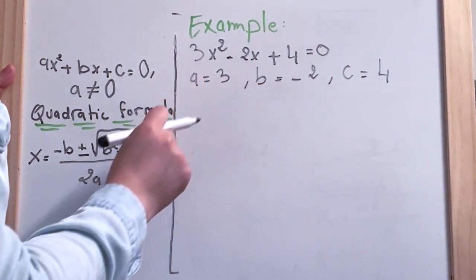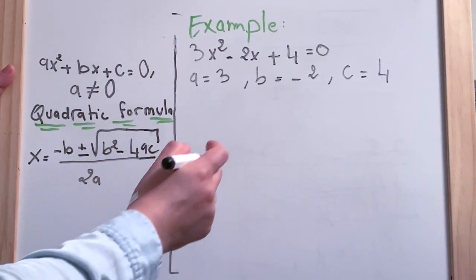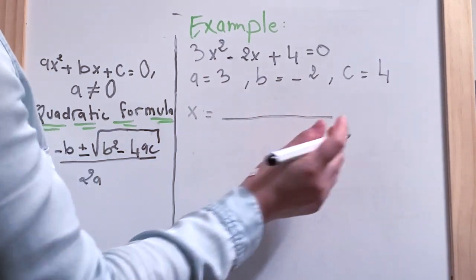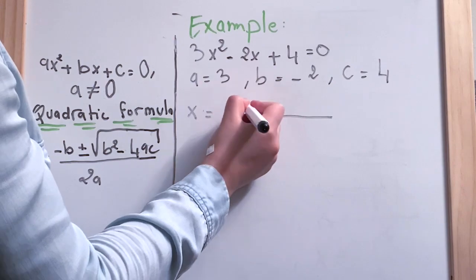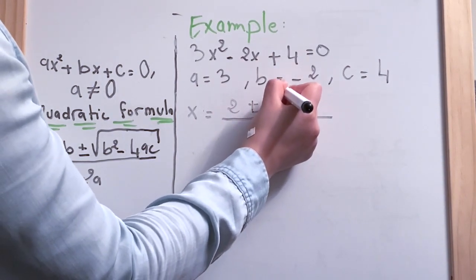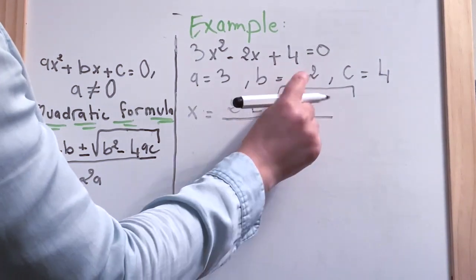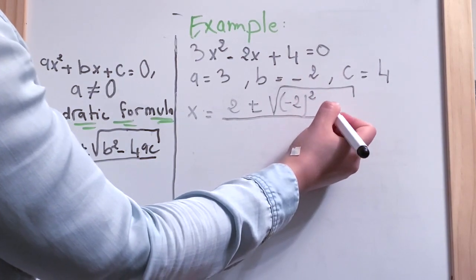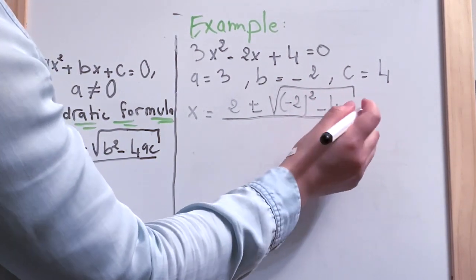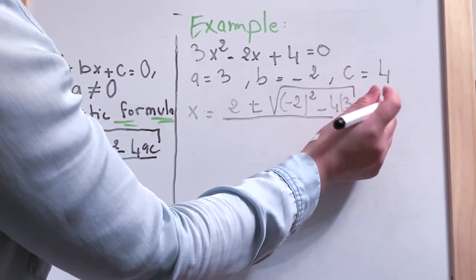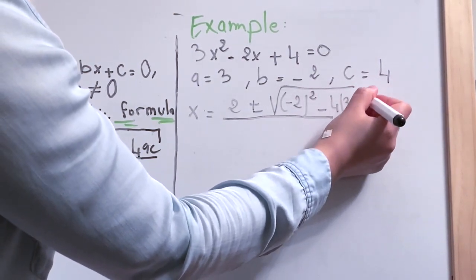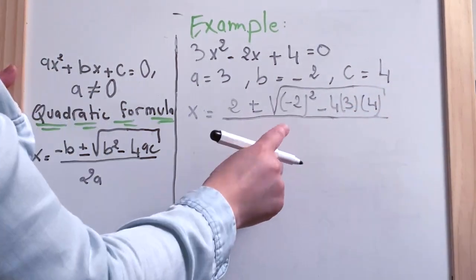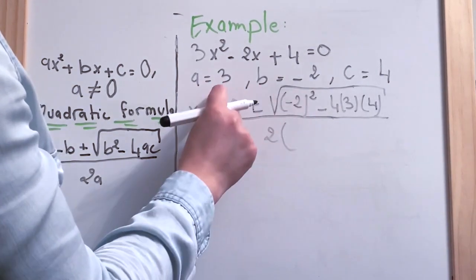Now we're going to take the numbers and plug them into the formula. So x is going to equal to minus b, which is 2, plus or minus square root of b squared, which is minus 2 squared, minus 4 multiplied by 3 multiplied by 4, over 2a which is 6.